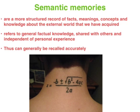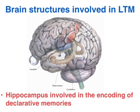Semantic memories, on the other hand, aren't unique to an individual — this knowledge is shared with other people. It's a more structured record of facts, concepts, intellectual skills, etc. So when we're recalling semantic memories, we generally recall them far more accurately than episodic memories.